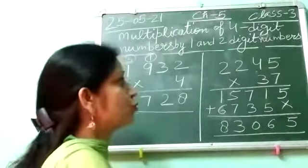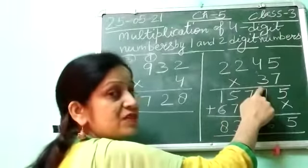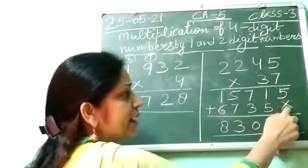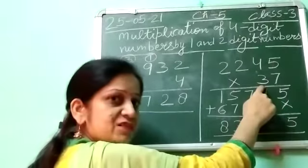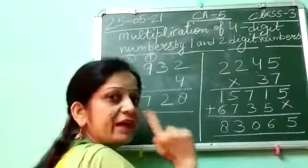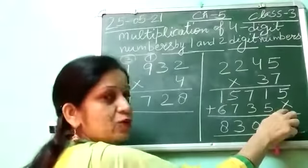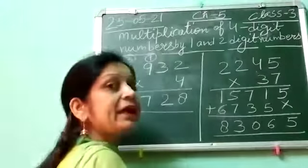Then students, what you have to do, you have to now multiply this whole number by 3. 3 means digit at tens place. For this, in second line you have to write cross at ones place. Because you are multiplying with tens digit, so you have to start writing from the tens place. Here you have to put cross.